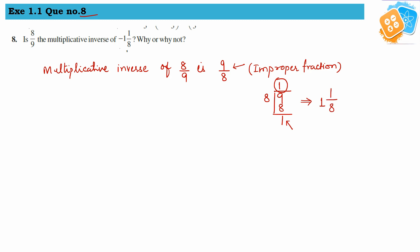1 1 by 8 is the multiplicative inverse of 8 by 9, so our answer is 1 1 by 8 is the multiplicative inverse of 8 by 9, but not minus 1 1 by 8. Because in multiplicative inverse we are taking reciprocal, we are not changing the sign.